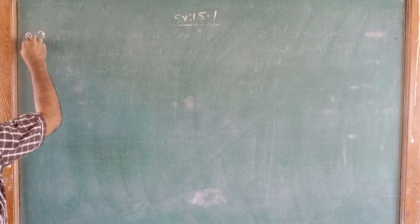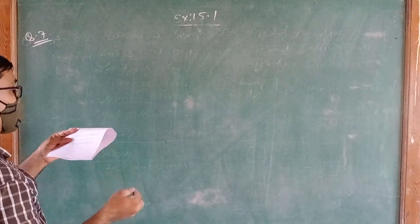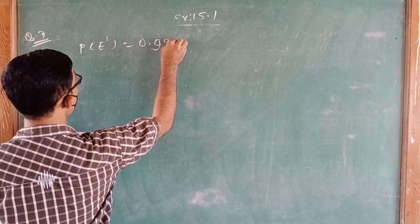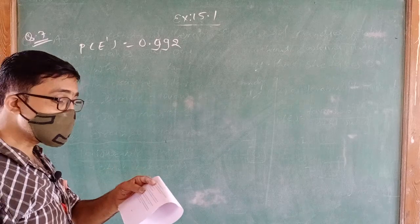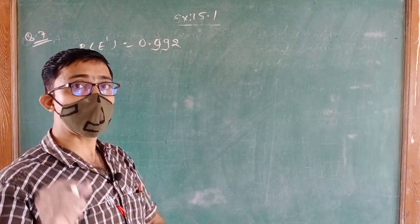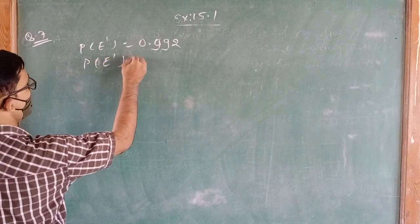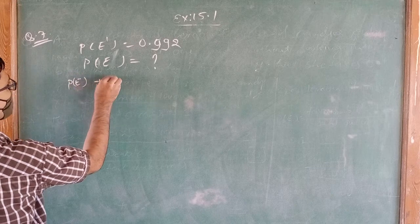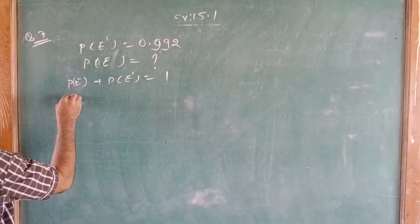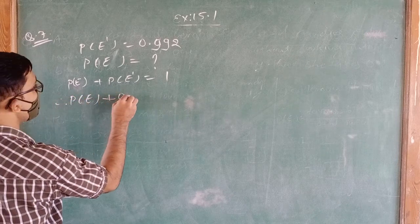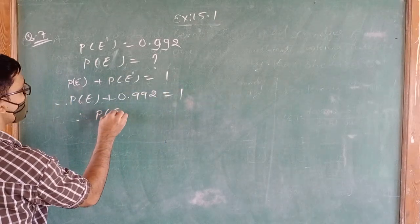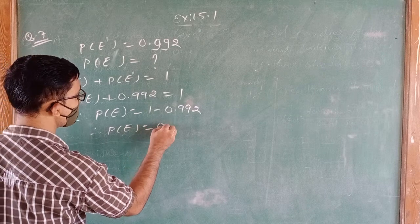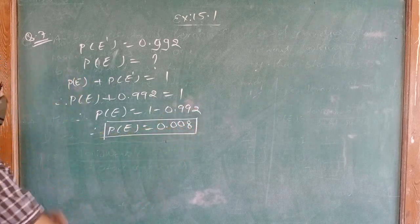Question number 7: It is given that in a group of three students, the probability of two students not having the same birthday is 0.992. What is the probability that two students have the same birthday? P(E) + P(not E) = 1, so P(E) + 0.992 = 1, therefore P(E) = 1 − 0.992 = 0.008.